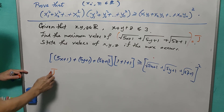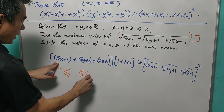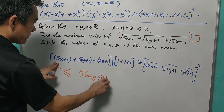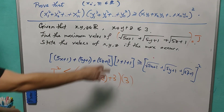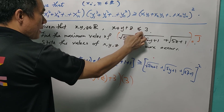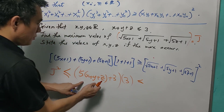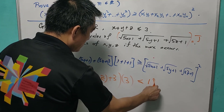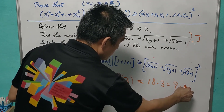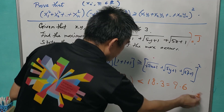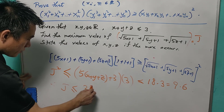So J² ≤ (5x+1 + 5y+1 + 5z+1) × (1+1+1) = (5(x+y+z) + 3) × 3. Given that x+y+z ≤ 3, this is ≤ (15+3)×3 = 18×3 = 54. Therefore J ≤ √54 = 3√6.